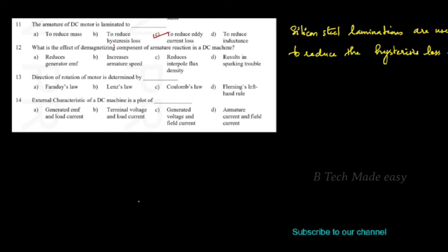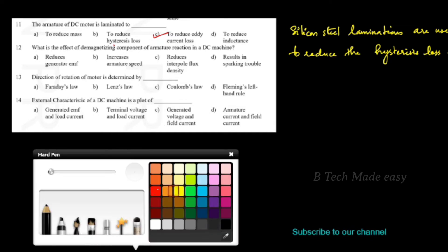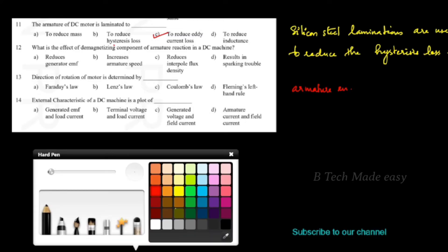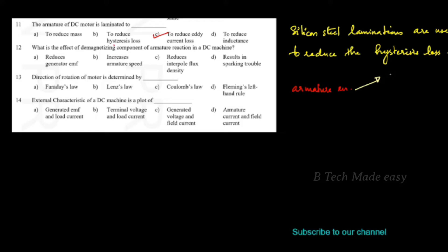What is the effect of the demagnetizing component of armature reaction in a DC machine? We will learn about armature reaction and its effects: demagnetizing, cross-magnetizing, etc. The armature reaction has the effect of demagnetizing and cross-magnetizing.